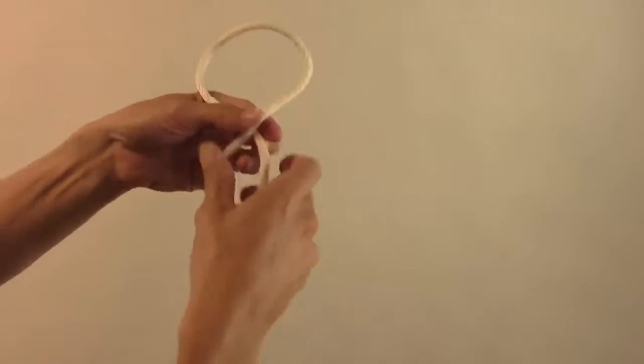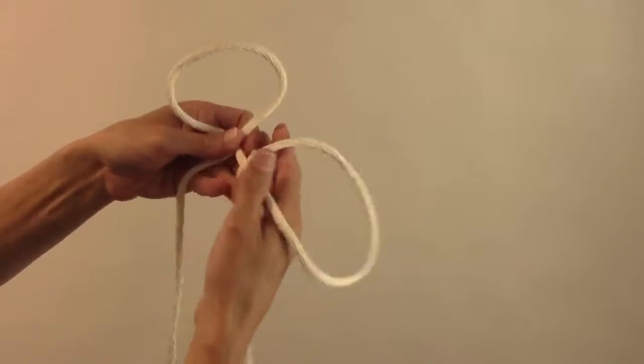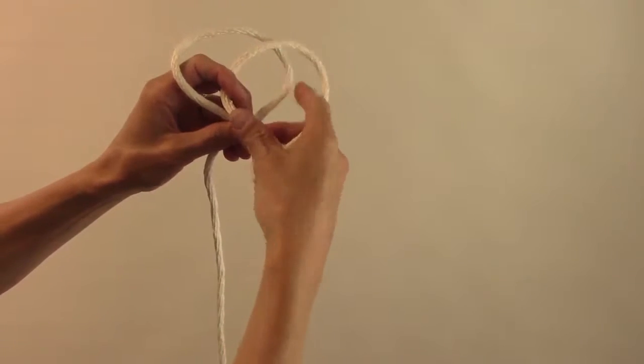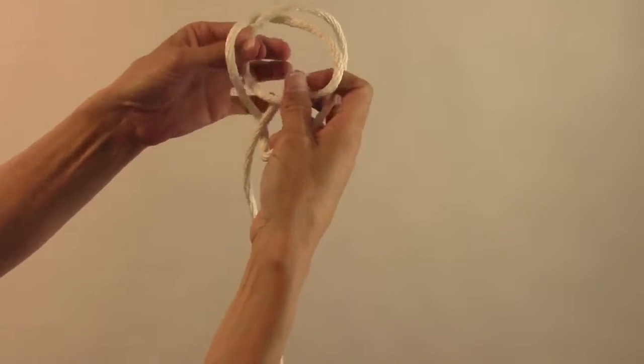Make a loop with it crossing in the front. Make another with it crossing in the back. Then we're going to put right over left and we're going to pull this line forward and this line backwards.